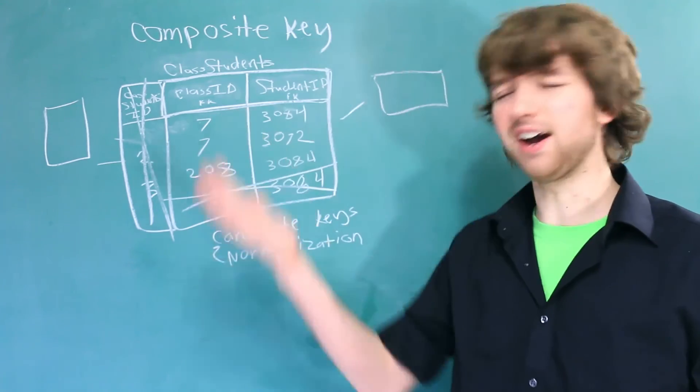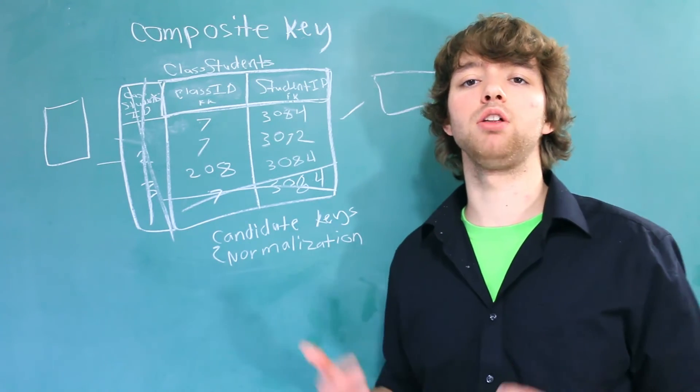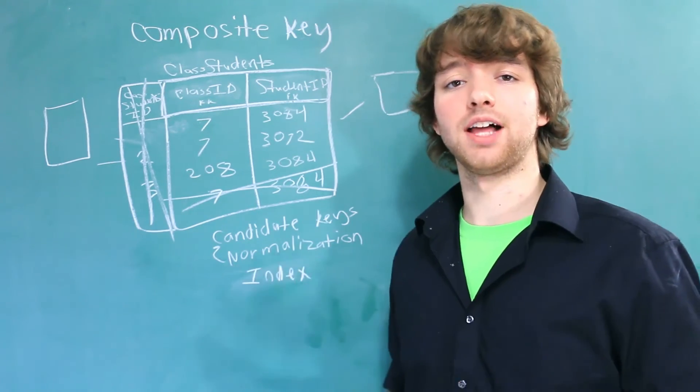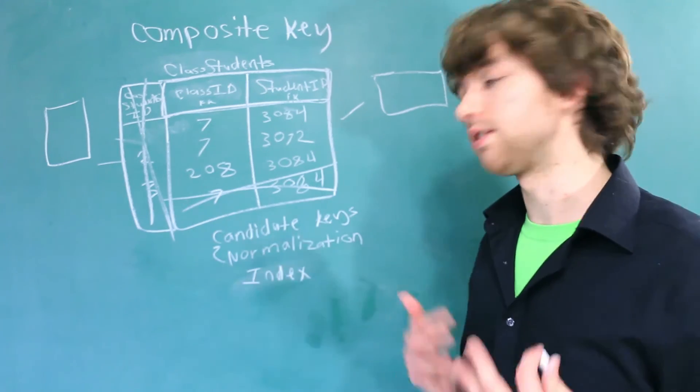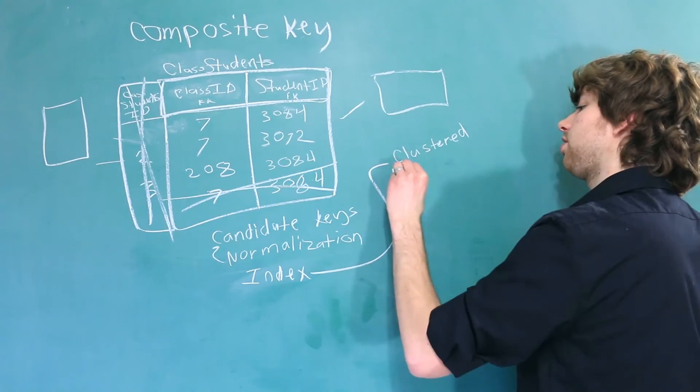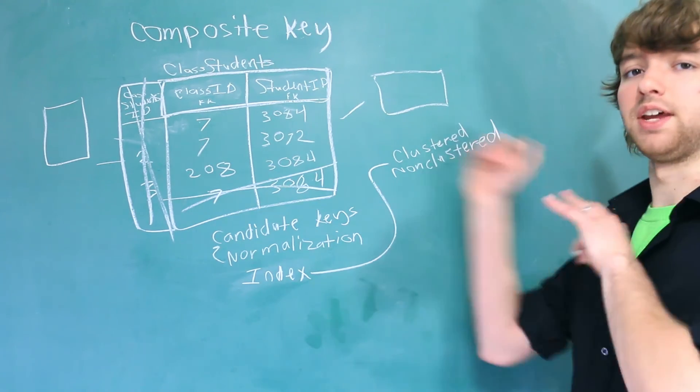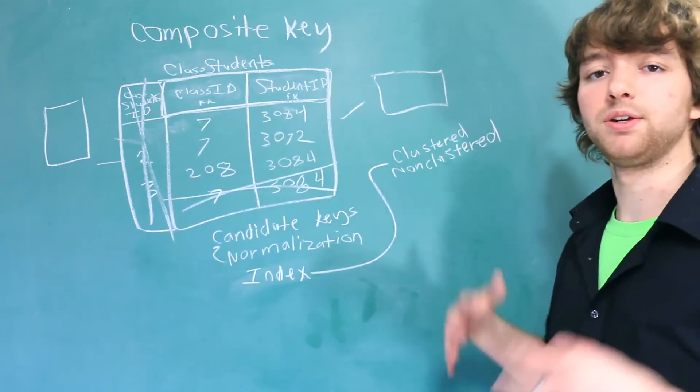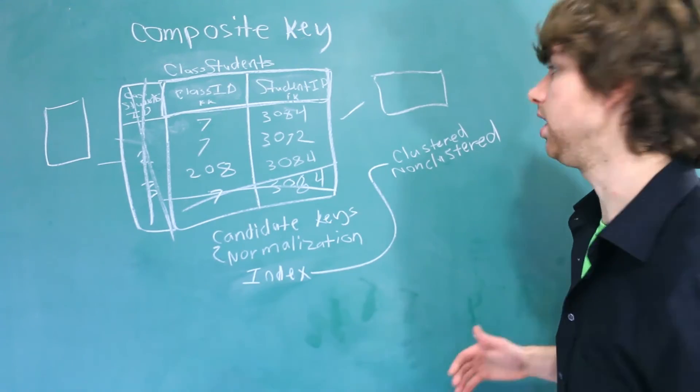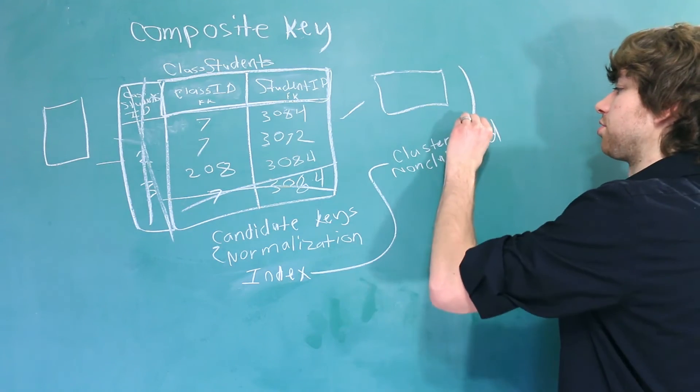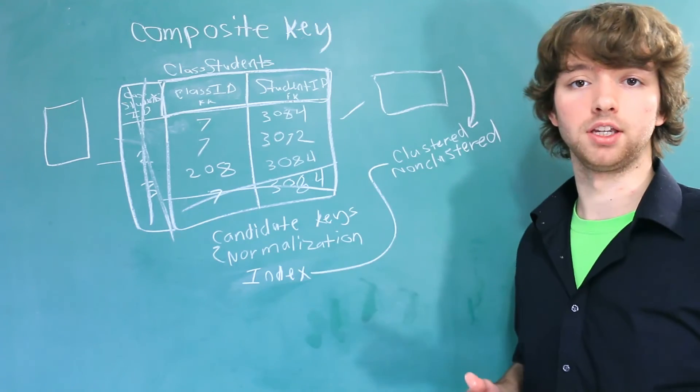Thanks for watching. Oh wait, I gotta talk about indexes. When you make a column a primary key, that column is automatically indexed. Now an index allows your database to work with that data much faster. And there's two kinds of indexes, or two classifications, clustered and non-clustered. Now we'll discuss all the details of this in another video dedicated to indexes, but since this video is about primary keys, I thought it would be relevant to say that primary keys are automatically clustered indexes. And what that means is that the data in the table is actually organized by the primary key.